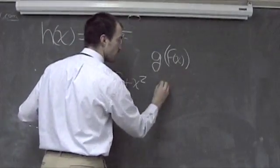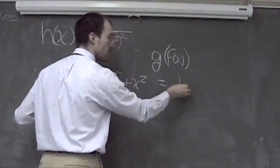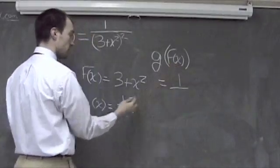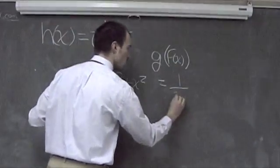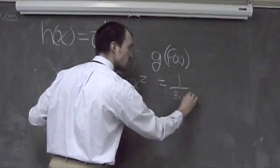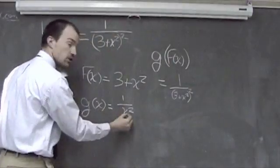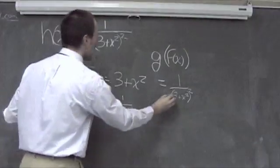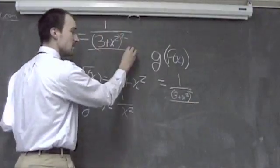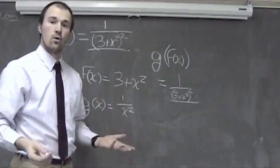Checking, g of f of x is equal to 1 divided by, now I'm going to insert my f of x which is 3 plus x squared quantity, and then squared as per the g of x quantity. Seeing how this is exactly the same as up here, we're complete.